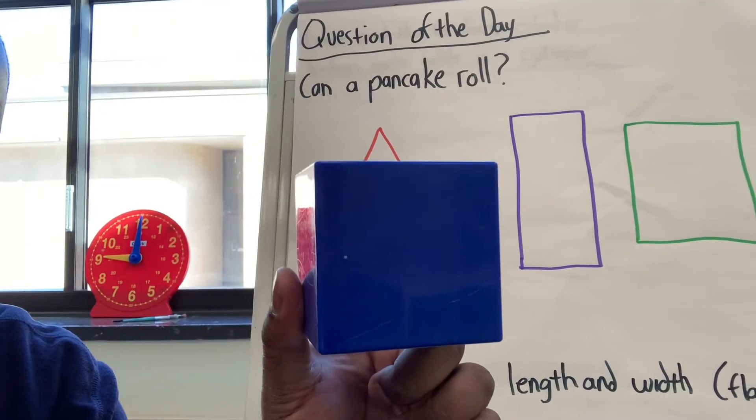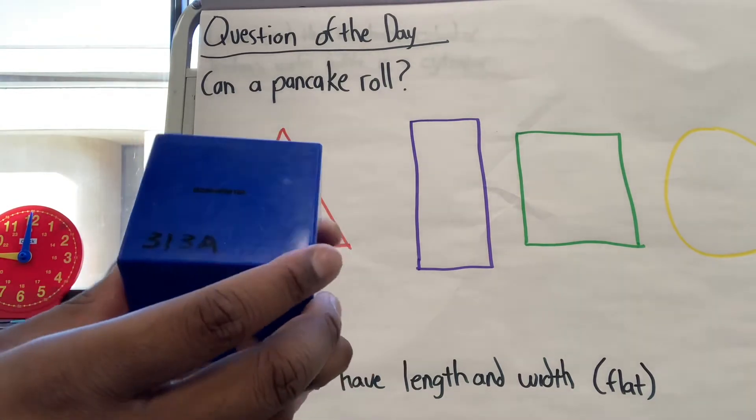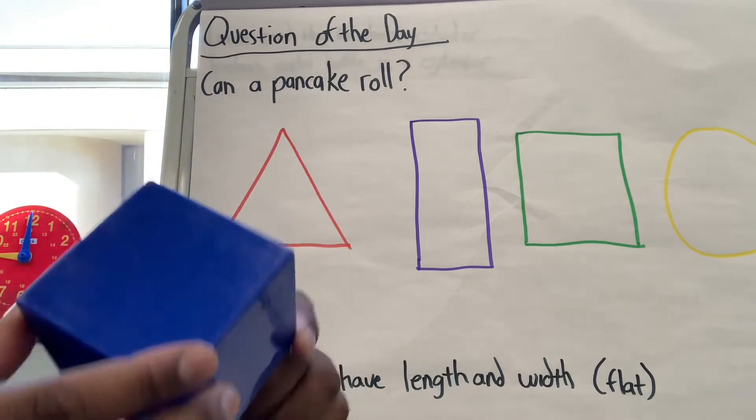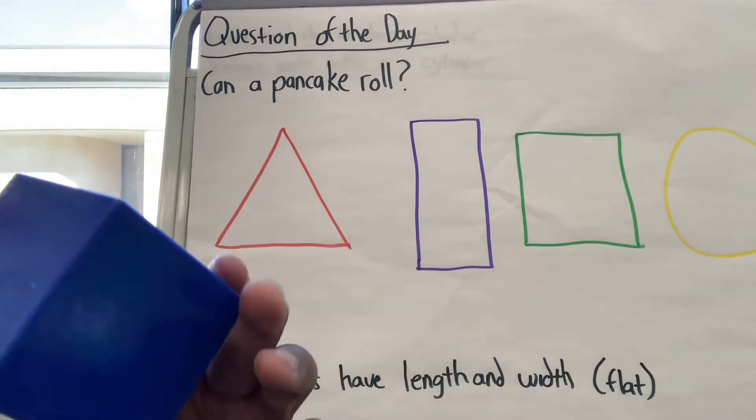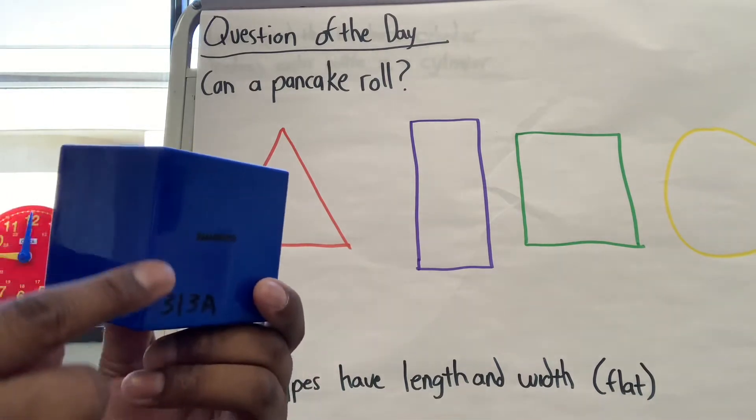What about this? What does this shape look like? It looks like a square but it's a cube. It's 3D. This square is flat. It only has length and width. This has faces and this has edges.